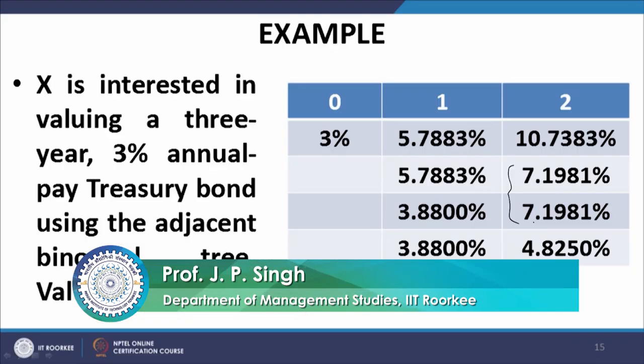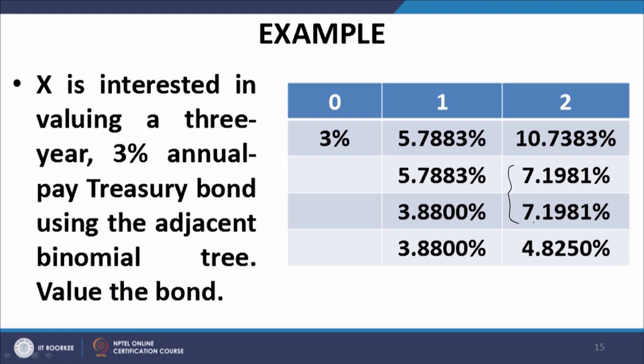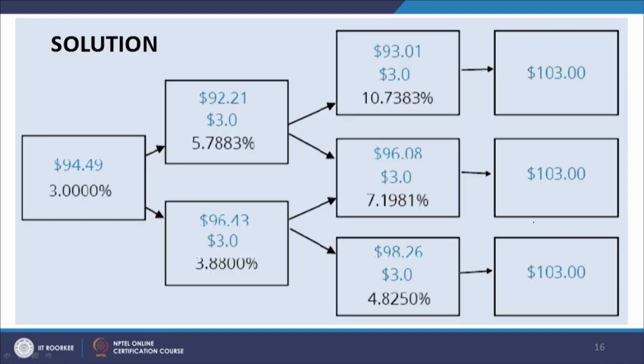Before the break we were talking about this particular example. We have a given tree and we have a 3-year 3% annual coupon treasury bond and we need to ascribe a value to that bond. This is the graphical depiction of the tree: at t=0 the interest rate is 3%, covering the period from 0 to 1. For the period from 1 to 2, the interest rates could take two values — 5.788% or 3.88% — both equally likely and both are forward rates.